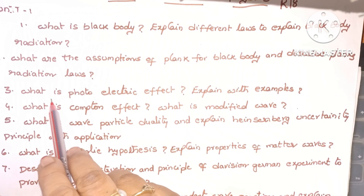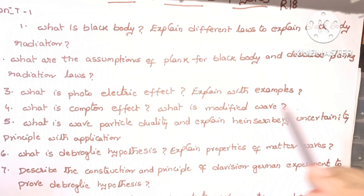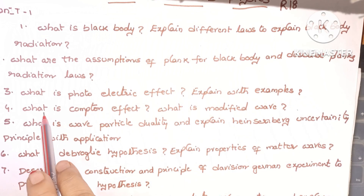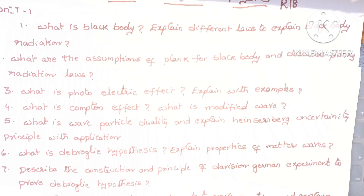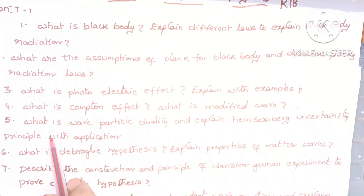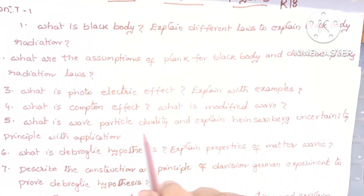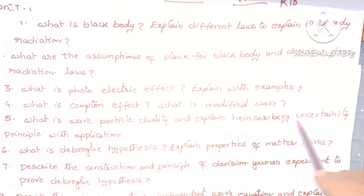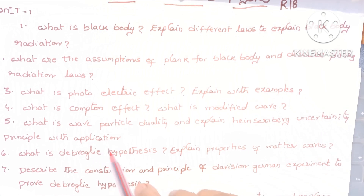Third question is what is the photoelectric effect? Explain with examples. Fourth question is what is the Compton effect and what is the modified wave? Fifth question is what is wave-particle duality and explain Heisenberg's uncertainty principle with applications.